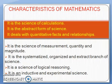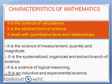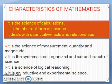Let us see what are the characteristics of mathematics. Mathematics is the science of calculations. It is the abstract form of science. Mathematics deals with quantitative facts and relationships. As already said, mathematics is the science of measurement, quantity, and magnitude. It is a systematized, organized, and abstract branch of science. Mathematics is the science of logical reasoning. It is an inductive and experimental science.